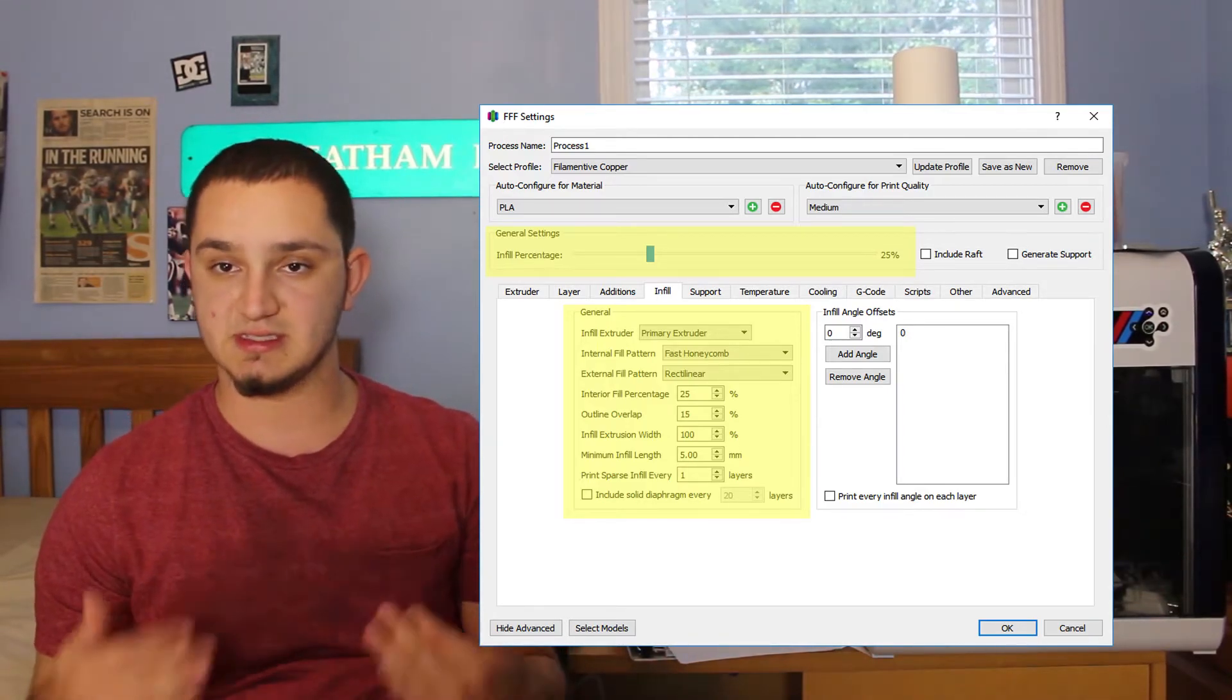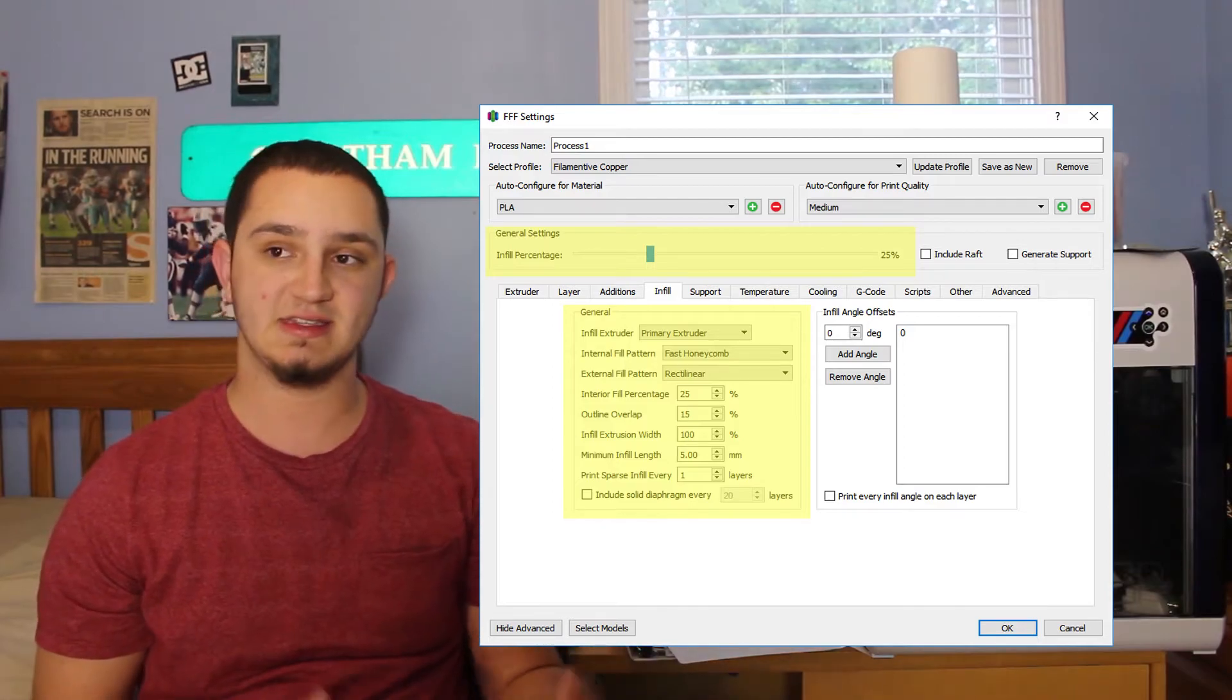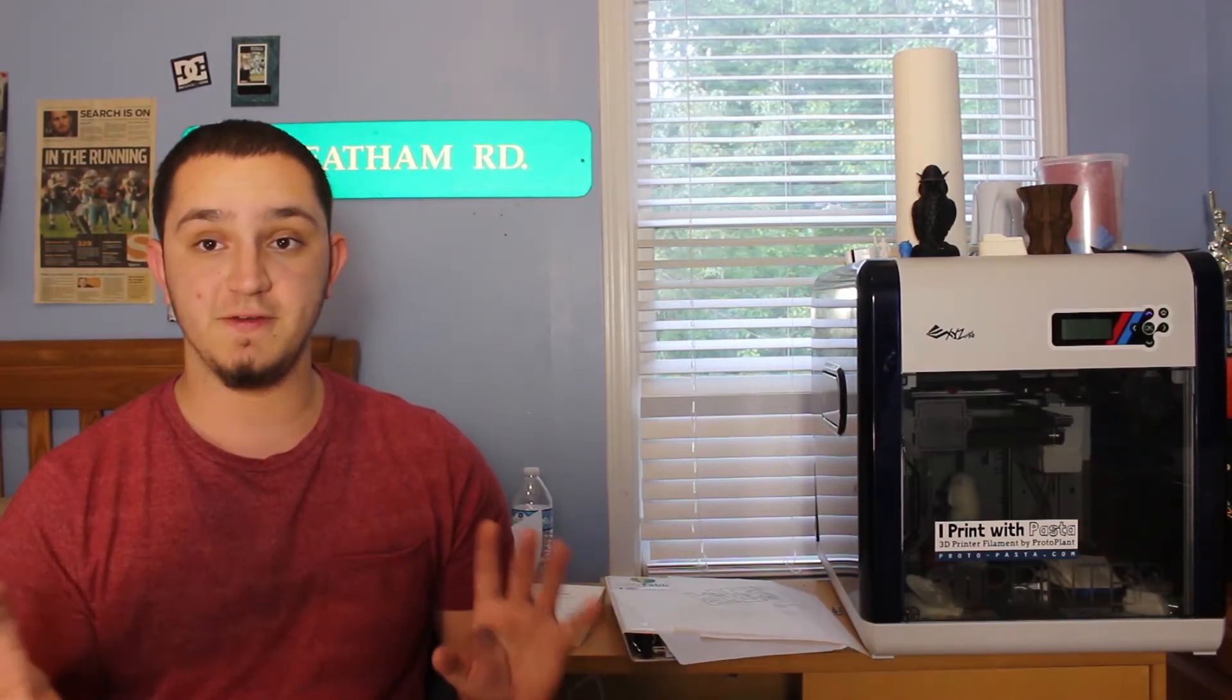As with all PLAs, I would recommend an active cooling fan, which the Robo 3D has. If you have your own preferred settings for PLA and active cooling, I would highly recommend you sticking with those as you know what works best for your machine and the environment your machine's in.